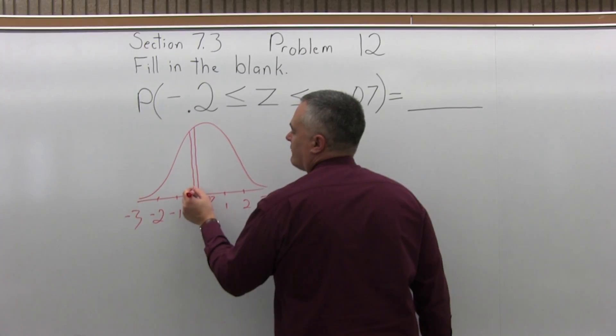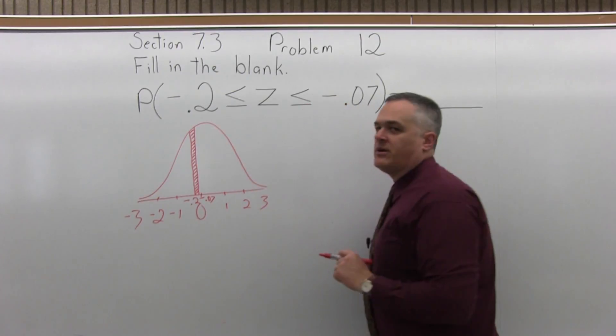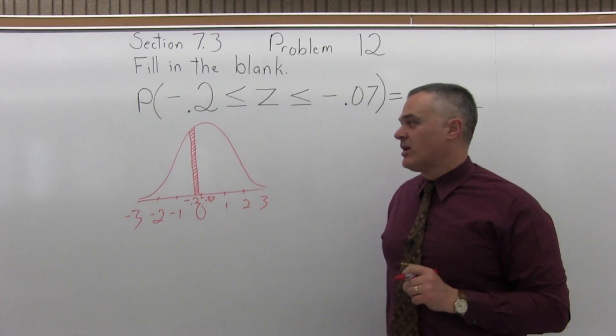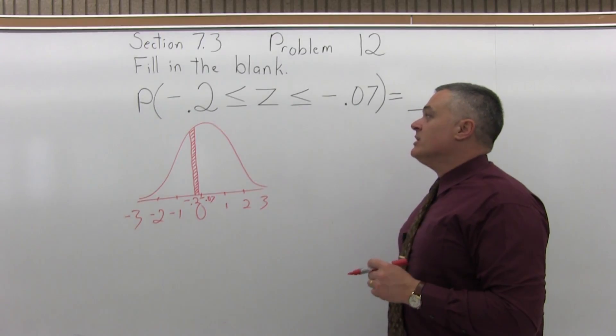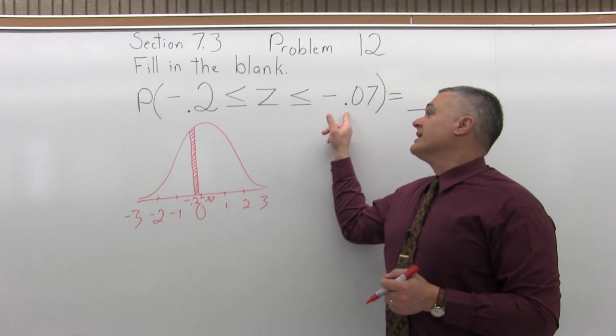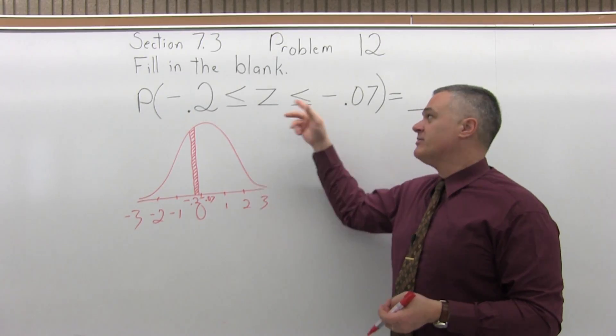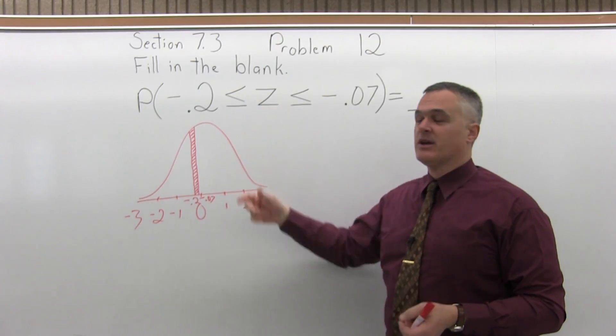You have a very thin band of area on your bell curve that we want to find the probability for. So what we have to do is look up both negative 0.2 and negative 0.07 in the chart. Find the two chart values and subtract them. All in-between questions like this one, that's the way they handle.